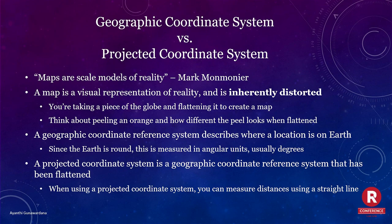A map is a visual representation of reality, and it's always going to be distorted, because at the end of the day you're taking a small slice of the globe and flattening it to create a map. The way I like to explain this is: think about peeling an orange and how different that piece of the peel looks when you flatten it out, depending on where you started. The geographic coordinate system describes where a location is on Earth relative to the equator and the prime meridian.